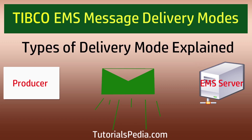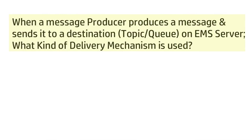I will explain in detail the different types of delivery mechanisms involved in EMS-based message communication. In the EMS messaging model we have message producers and message consumers. Producers send messages to destinations on the EMS server, which sits in the middle. The destination can be a topic or a queue — queues for point-to-point communication and topics for publish-subscribe.